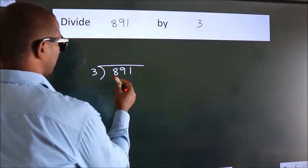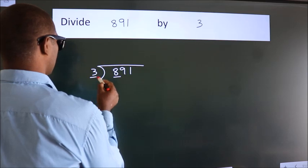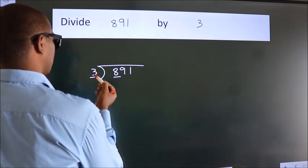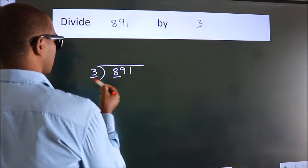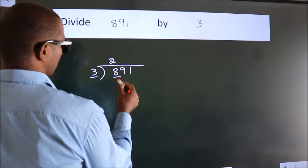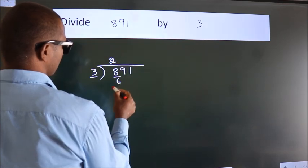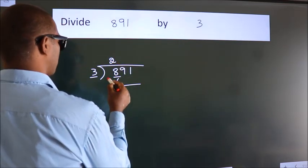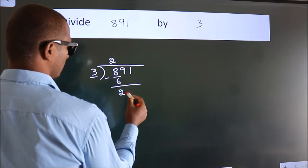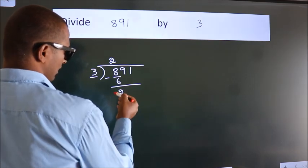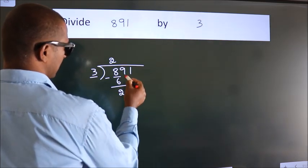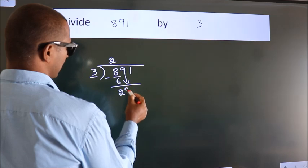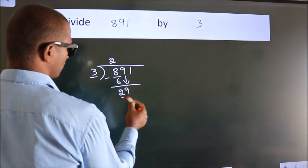Here we have 8, and here 3. A number close to 8 in the 3 times table is 3 2's = 6. Now we subtract and we get 2. After this, bring down the beside number — so, 9 down. So, 29.